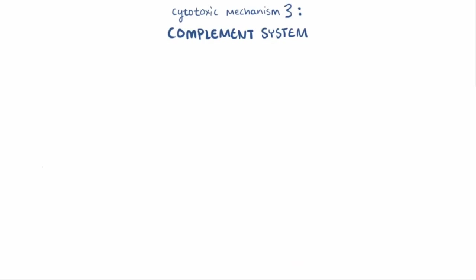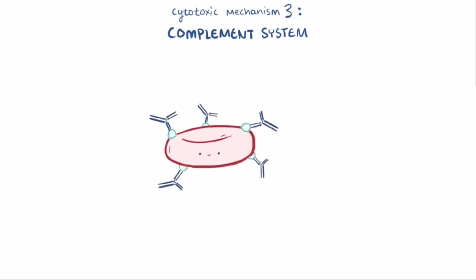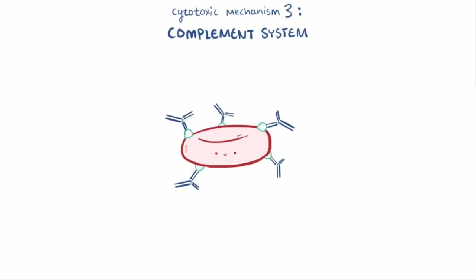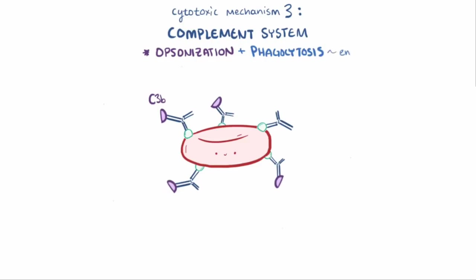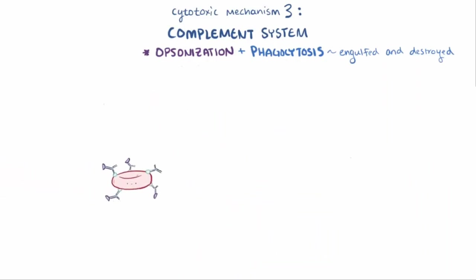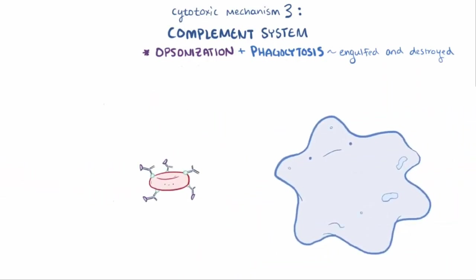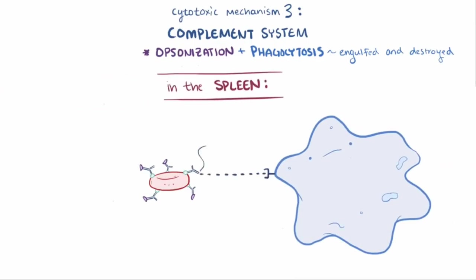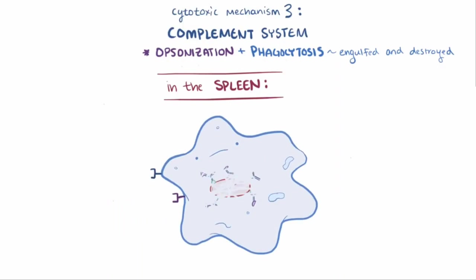The third cytotoxic mechanism of type 2 hypersensitivity happens when IgG antibodies coat a blood cell that is bound by C3b, another one of those complement protein fragments. At this point, we say that the cell has been opsonized, which means it's targeted for phagocytosis — where they get engulfed and destroyed by phagocytes like macrophages and neutrophils. Once opsonized, the antibody-antigen complex and the cell it's attached to encounters a phagocyte in the body's blood filtration organ, the spleen. The phagocyte targets the cell by binding to the Fc tail of the antibody or the C3b bound to the IgG, then engulfs and destroys the cell.